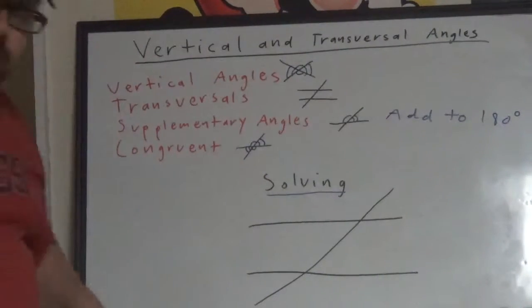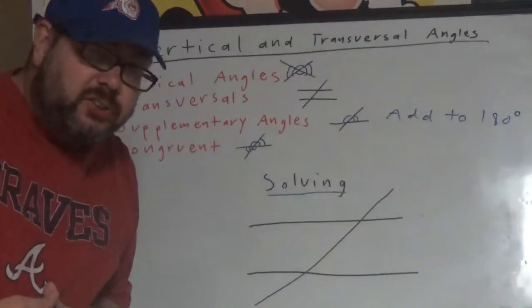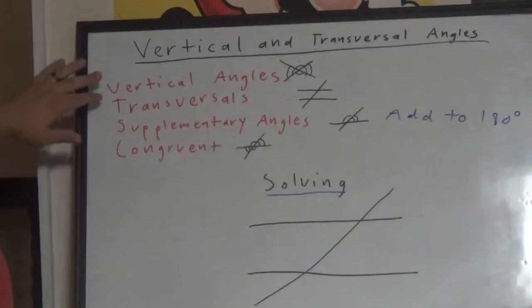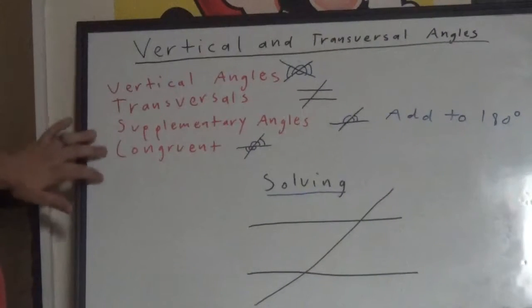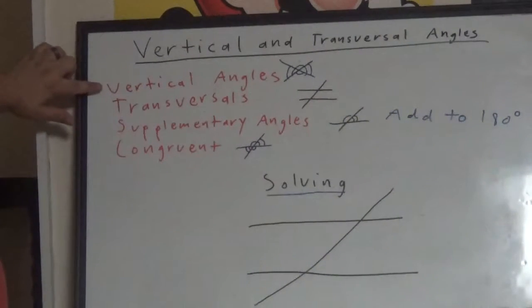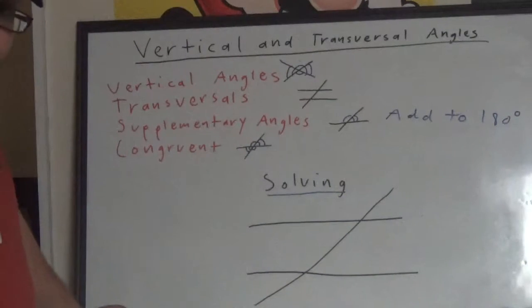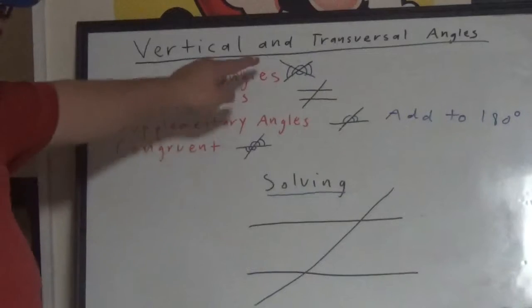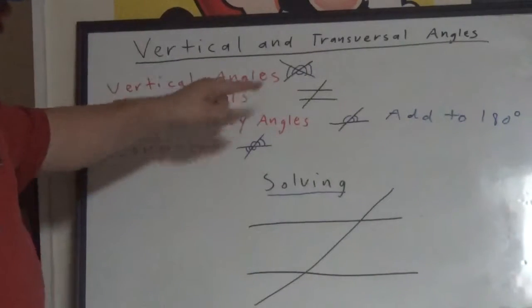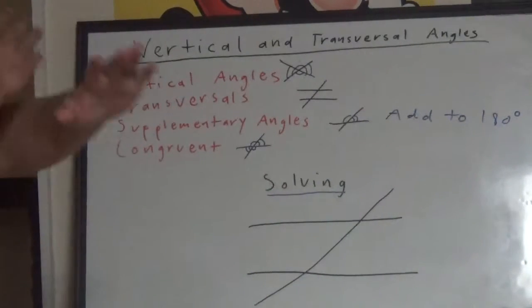I want to start by talking about four definitions, and these are the ones I have written on the whiteboard. The first one is vertical angles. When we have two intersecting lines, as you see these two black lines that are intersecting, meaning they cross each other...